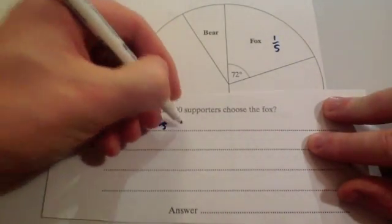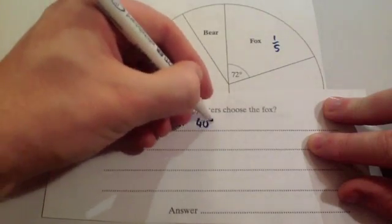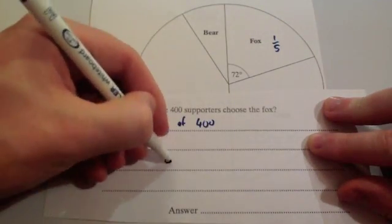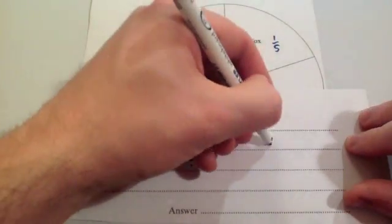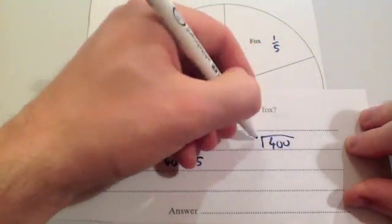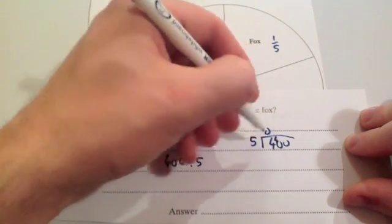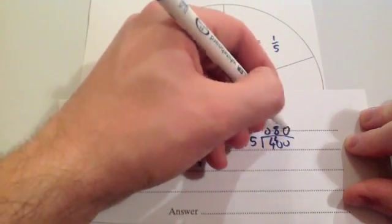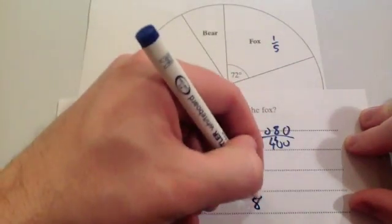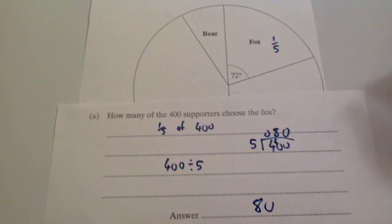That means we want a fifth of 400 supporters. So we're going to do 400 divided by 5. If you can't remember how to do that, use short division. 400 divided by 5. 5 into 4 doesn't go, remainder 4. 5 into 40 goes 8 times. And 5 into 0 goes 0. So the answer would be 80 supporters. So 80 supporters choose fox.